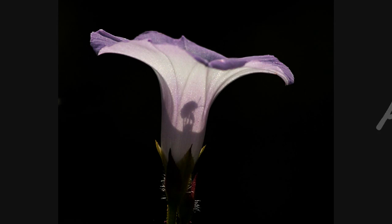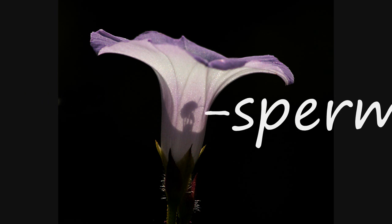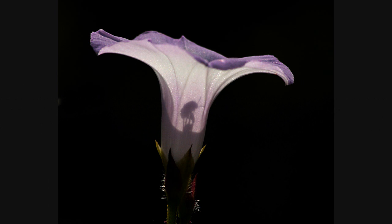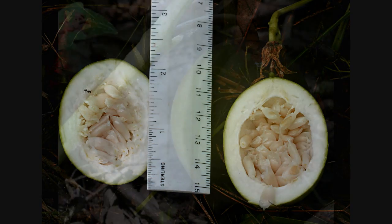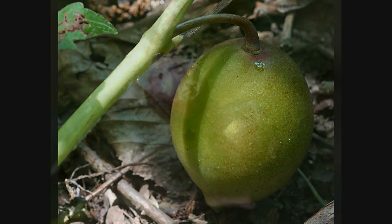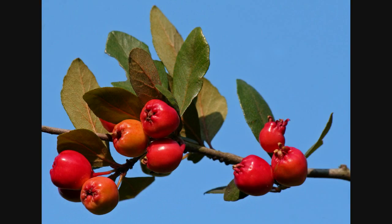Angiosperms get their name from the Latin words 'angi,' which means enclosed, and 'sperma,' which means seed. All angiosperms have seeds which are enclosed inside a fruit. All of the foods we eat which contain seeds, from apples to zucchini, are actually fruits produced by flowering plants.